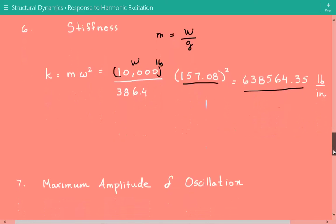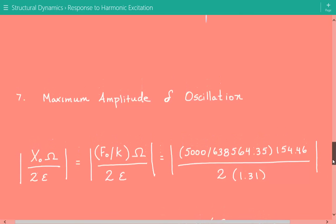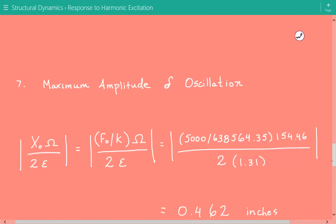Once we have the stiffness, now we can calculate the maximum amplitude of the oscillations. And this is going to be equal to XO times capital omega, the excitation frequency, divided by 2 times epsilon.